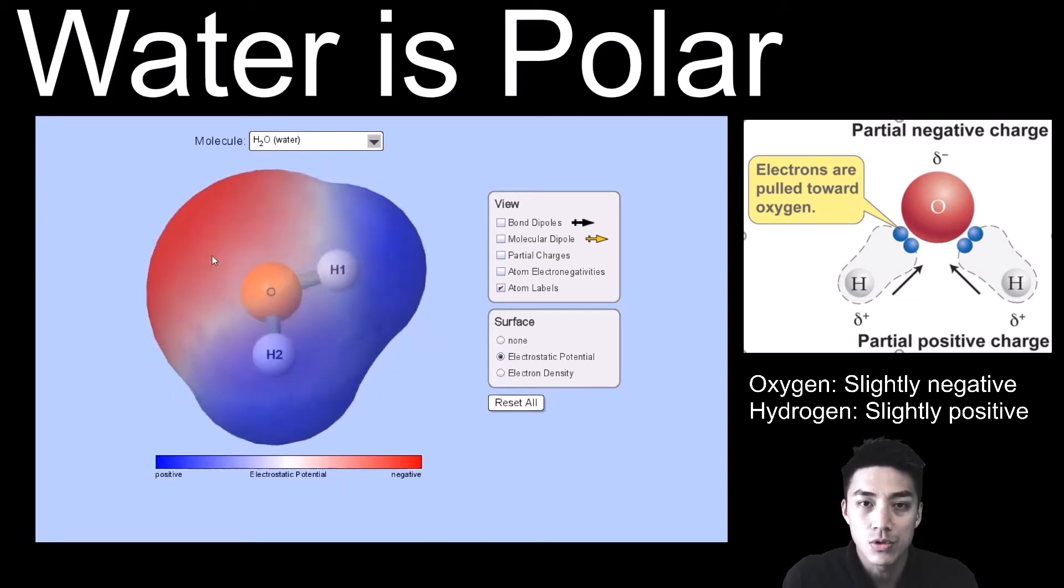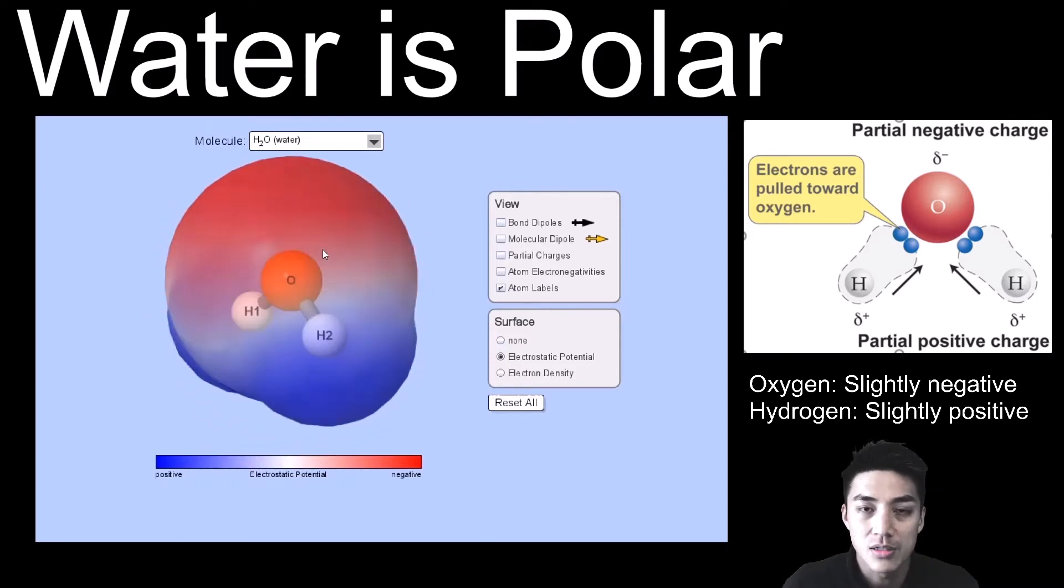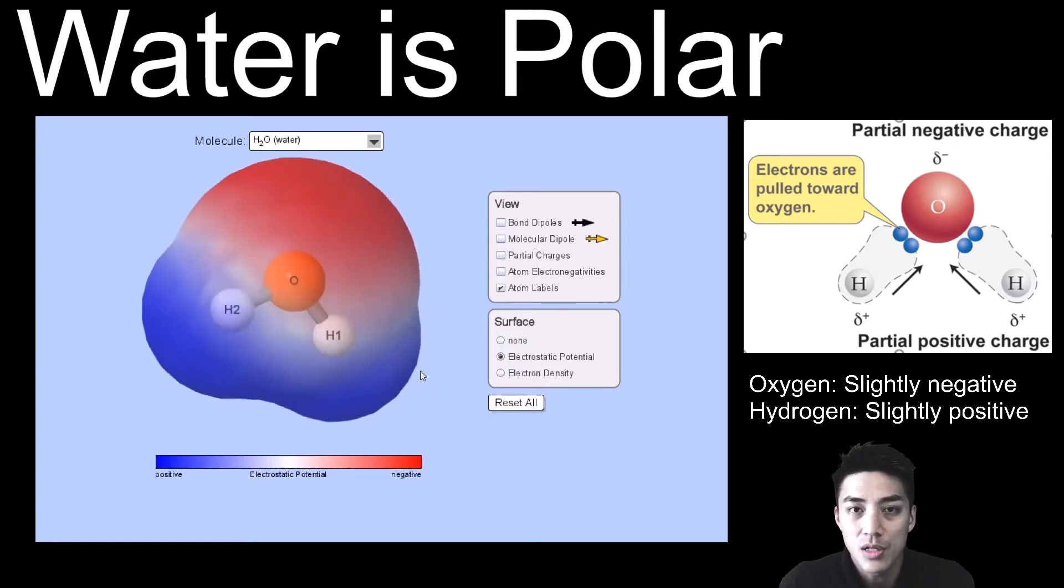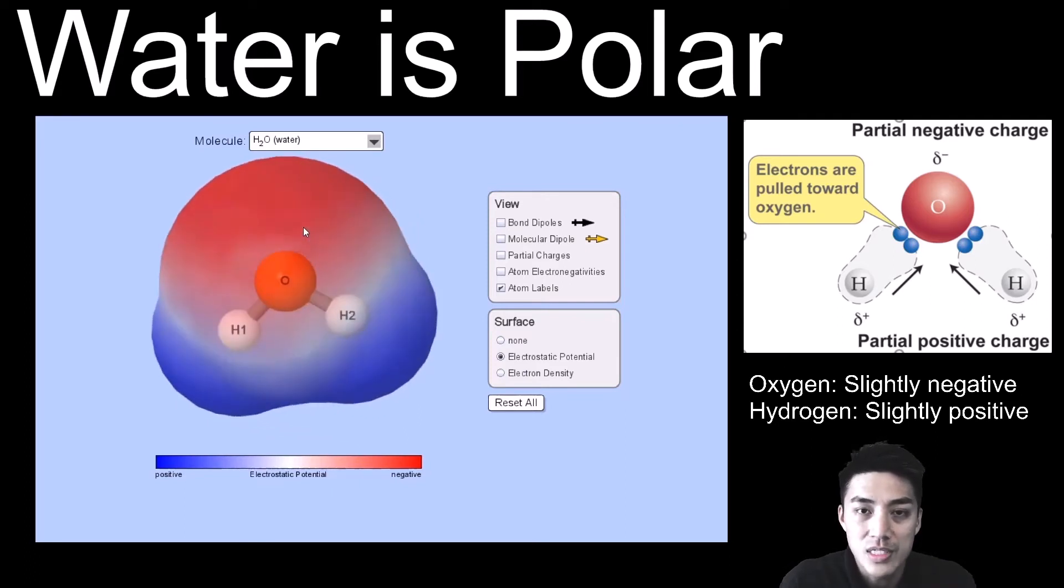So there's this unequal sharing of electrons. Meanwhile, the hydrogens are colored blue because they're slightly positive. And when you have two different regions on this molecule, one side is positive, the other side is negative, we say that it's polar.